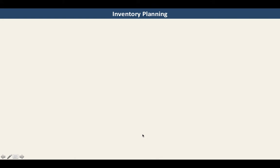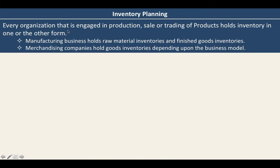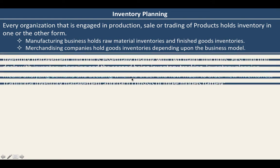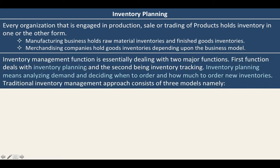Let us discuss inventory planning. Every organization engaged in production, sale, or trading of products holds inventory in one form or another. Manufacturing businesses hold raw material inventories and finished goods inventories, while merchandising companies hold goods inventories depending upon the business model. Inventory management function is essentially dealing with two major functions: inventory planning and inventory tracking.